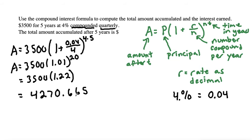When dealing with money, you usually round to the nearest cent. The number after the sixth decimal is five, so we'll add one to the sixth because it's five or up. So $4,270.67 is the amount that we have after five years.